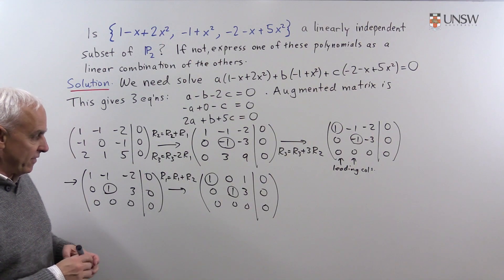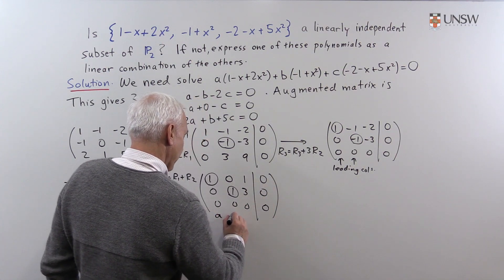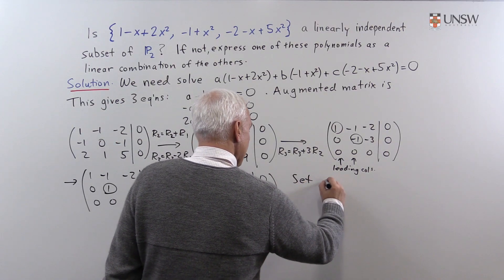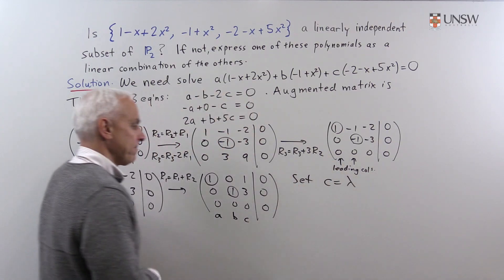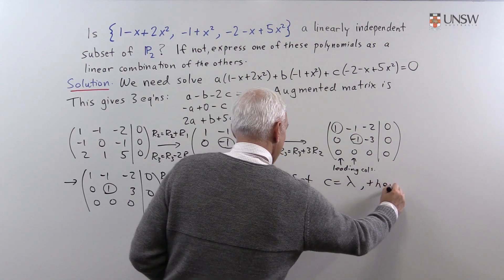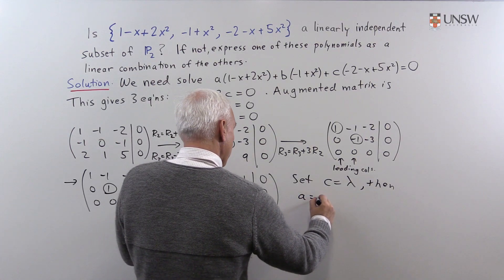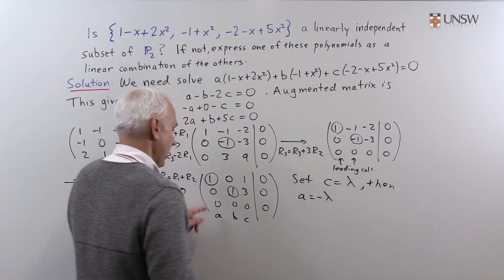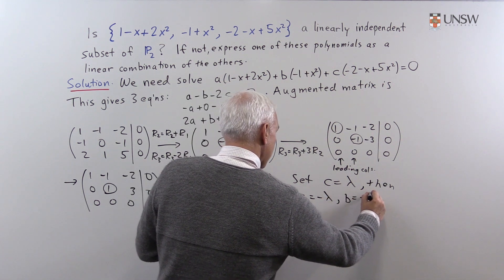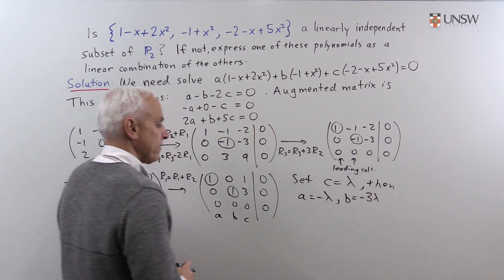So, how do we read off solutions? Well, remember our variables are a, b, and c. So, we can set c equal to some parameter lambda. And then, in terms of that lambda, a will be equal to minus lambda. And from the second one, b will be equal to minus 3 lambda.